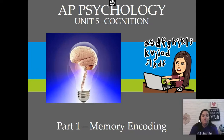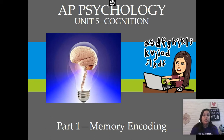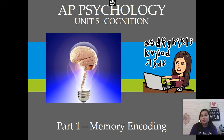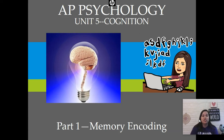Hello, these are flipped notes 5-1, the first for unit 5 on cognition, which is all about how we think, including memory, language, and intelligence. My bitmoji is encoding material, getting information into her laptop. This section is all about how we get information into our memory storehouse. Let's go.